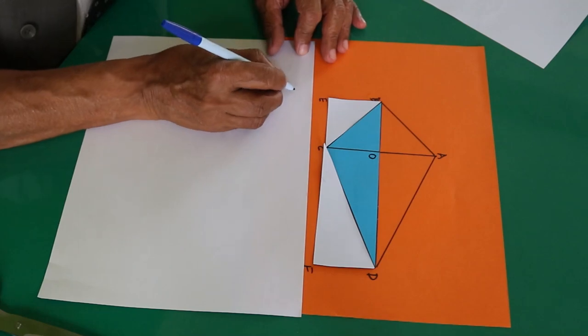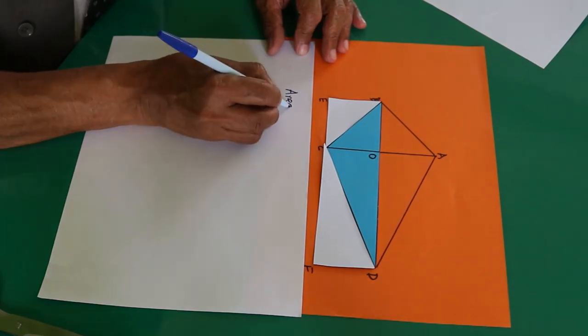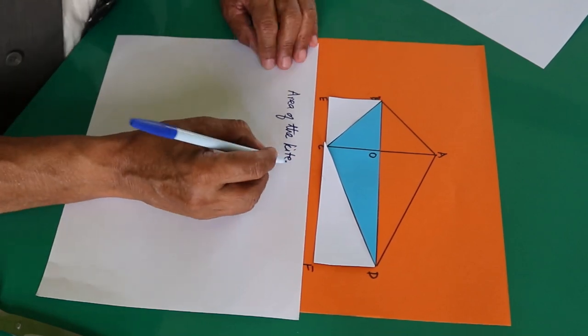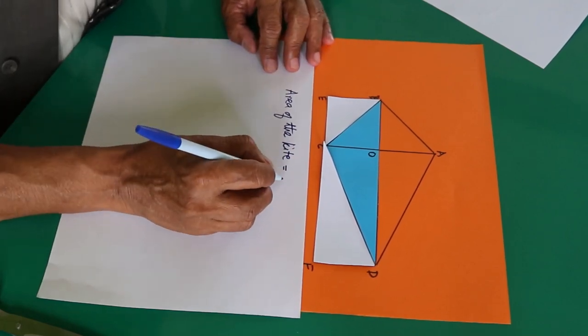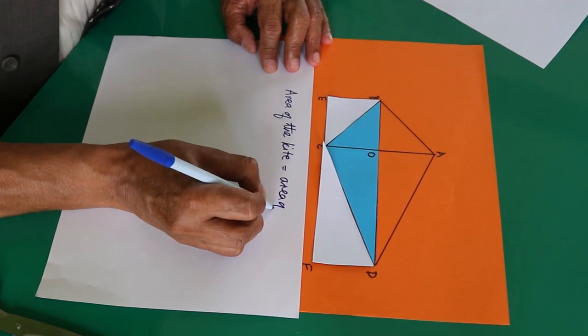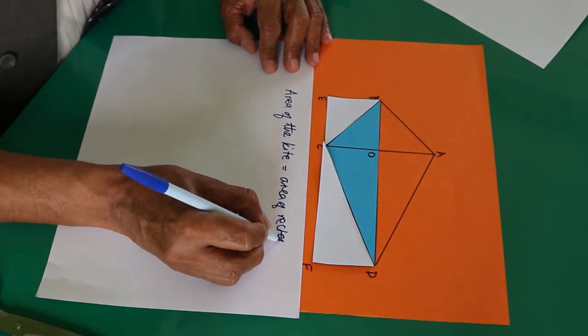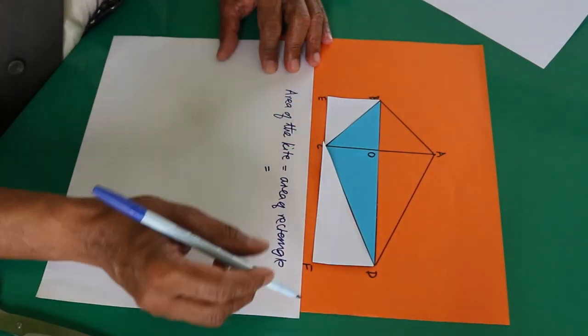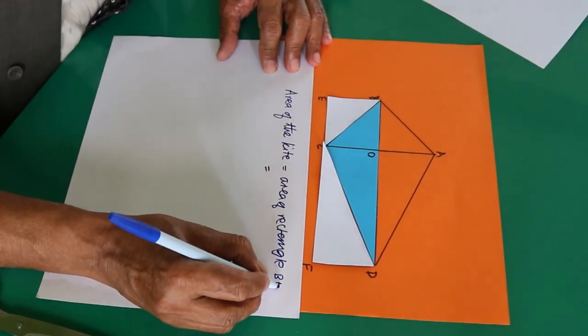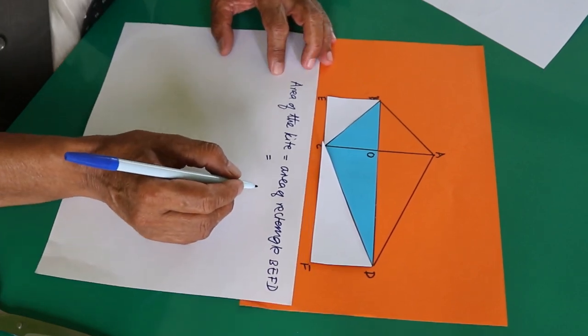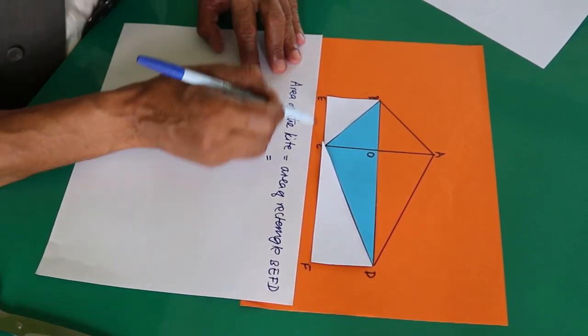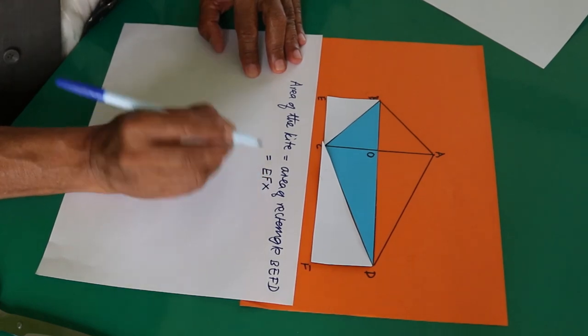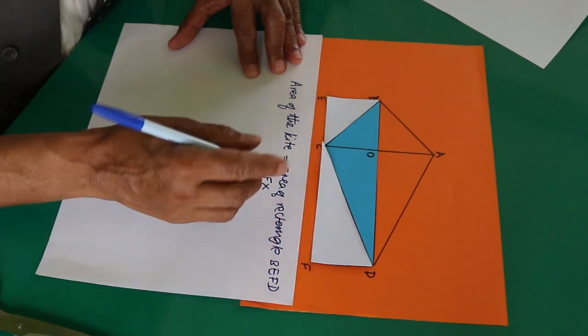So now we write area of the kite equals to area of rectangle. This rectangle BEFD has the area length into breadth, that is EF into FD.